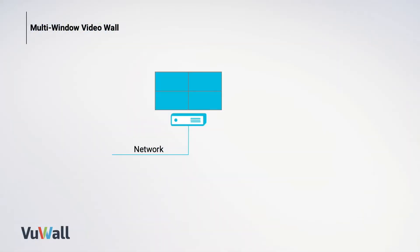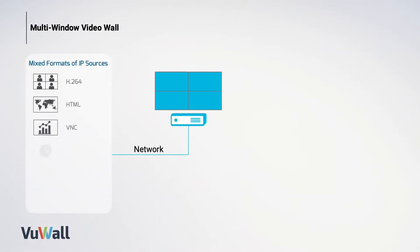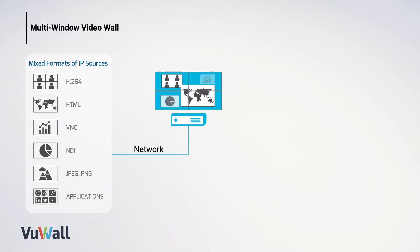PAC can work as a standalone multi-window IP decoding device and is able to power up to four displays at a time, displaying IP sources in a variety of formats.